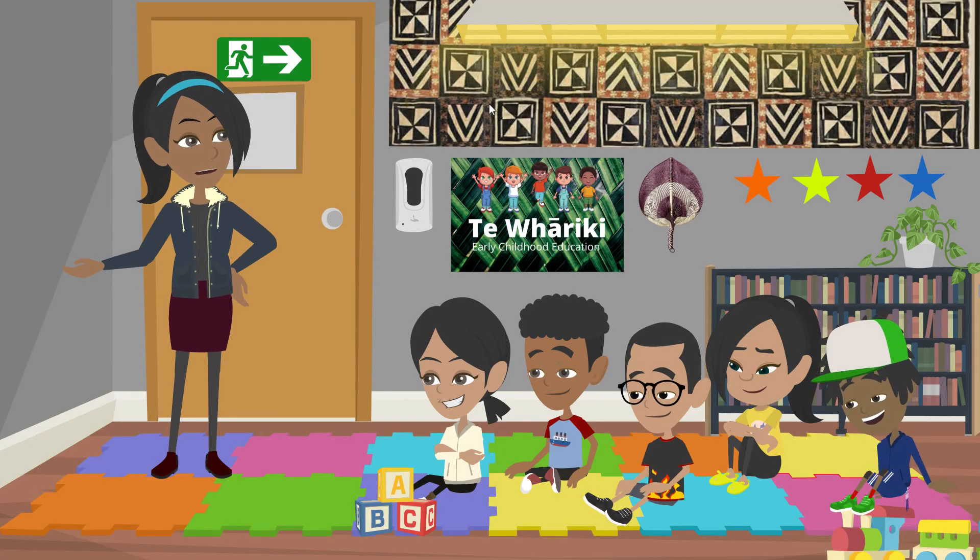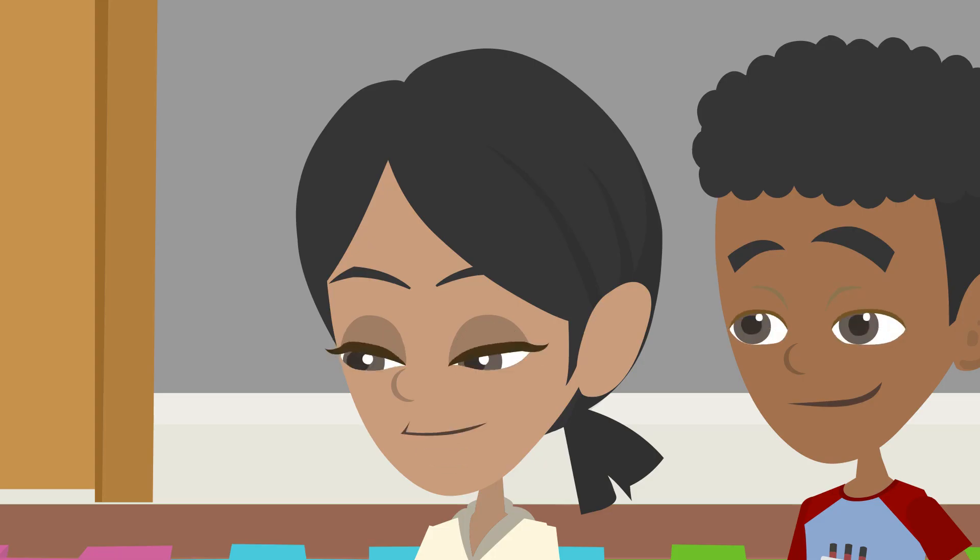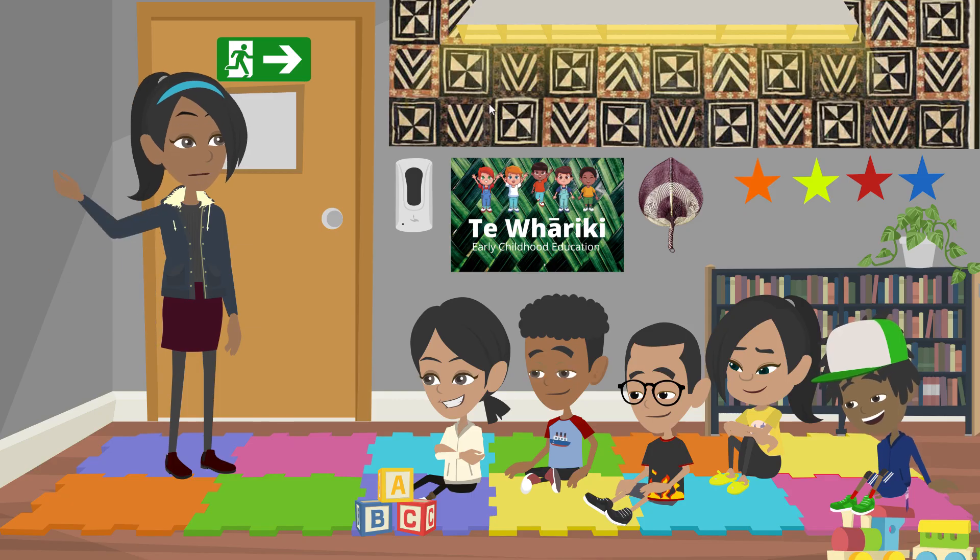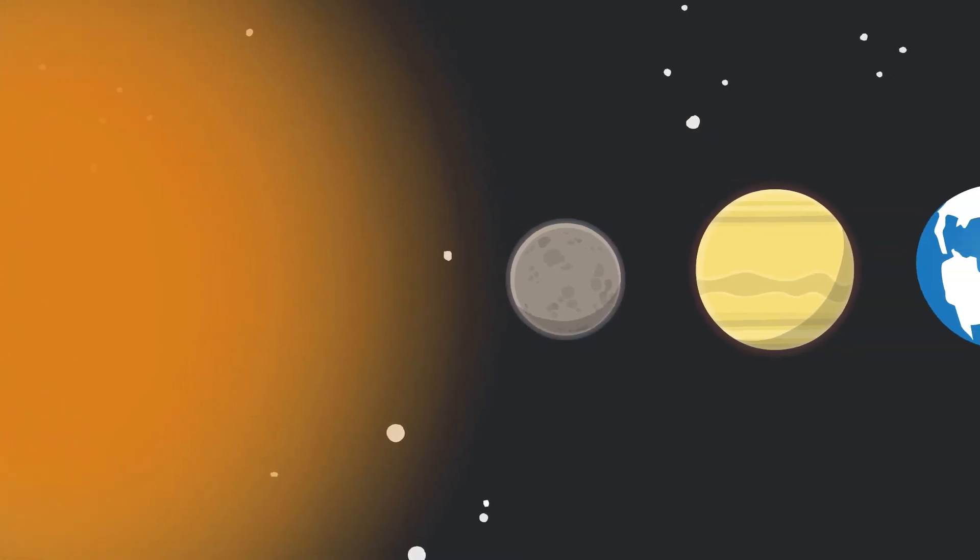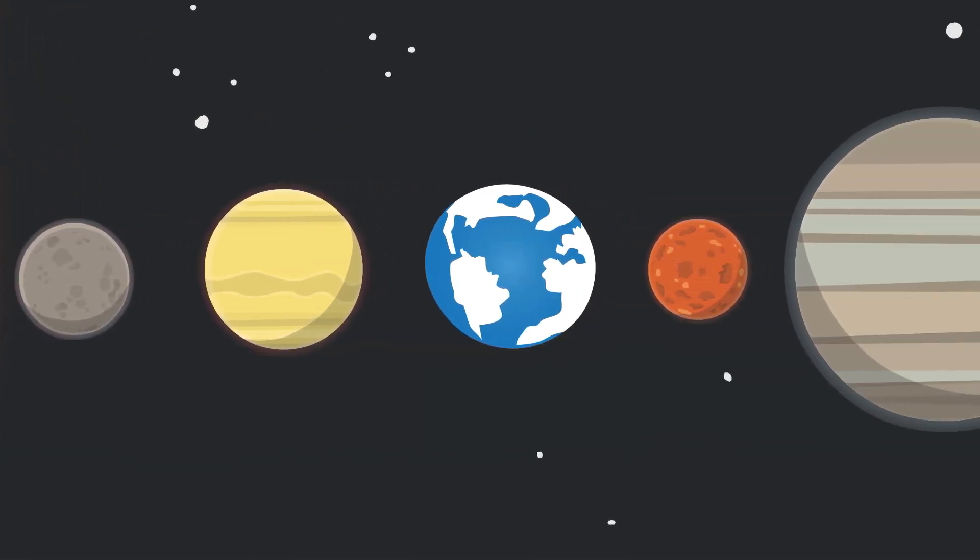Who can name some planets in our solar system? Oh, I know! Mars, Saturn, Venus. Wow, awesome! So we have eight planets in our solar system, and they are all different sizes and made up of different things.